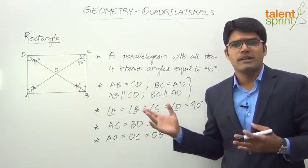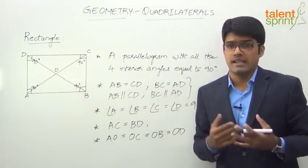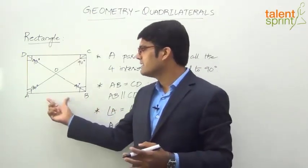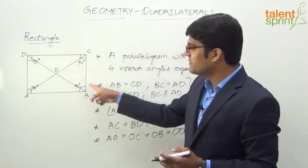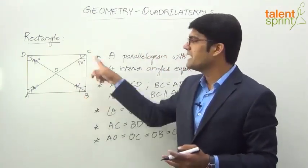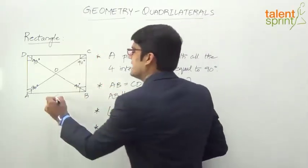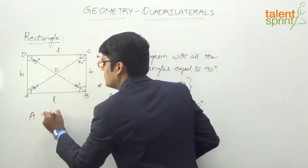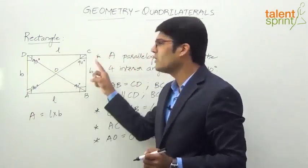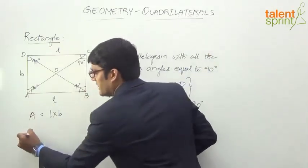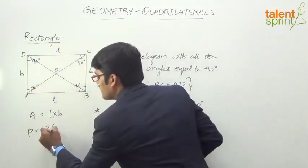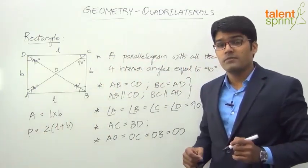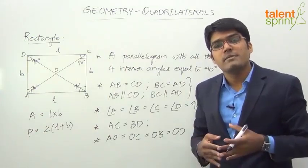Now regarding area and perimeter — we have already discussed these in mensuration. For any quadrilateral, the area is base into height. Here the base is AB and the height is BC, so area equals AB into BC. Generally we call it length into breadth, so area equals length times breadth, which is base times height. The perimeter is L plus B plus L plus B, which equals two times of L plus B.